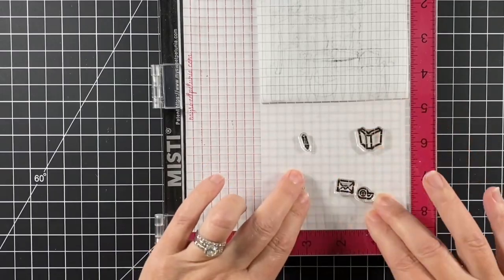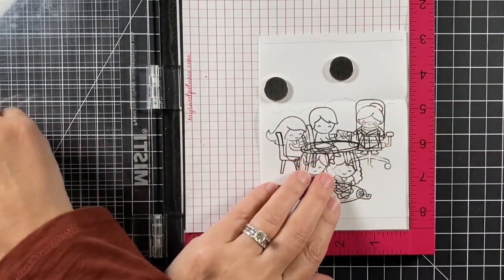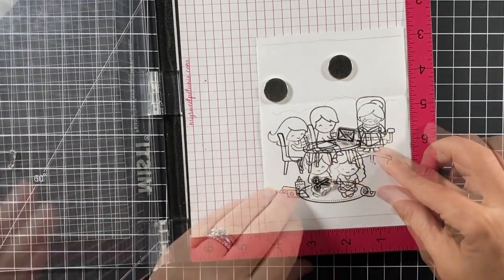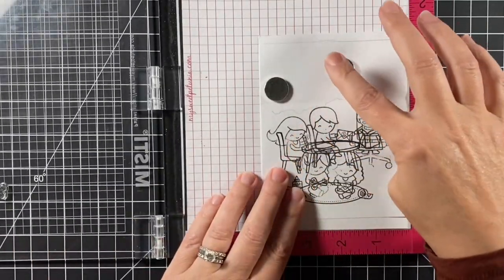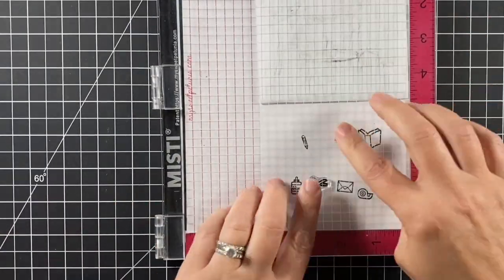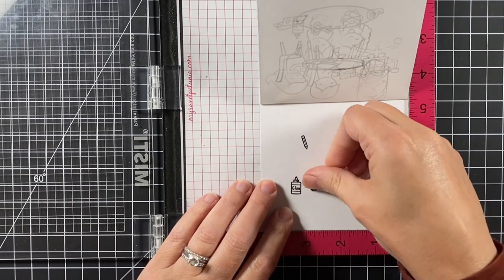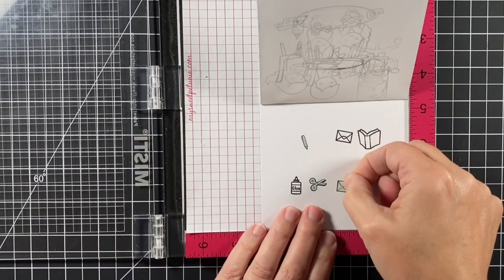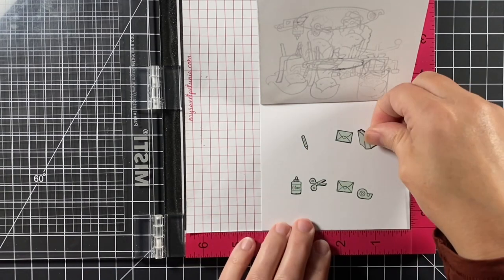Once I have some of those number ones all in place I'll pick those up on the door of the MISTI and flip up my scene and take my jet black ink and stamp them down. I have cut little masks for each of those images out of full stick post-it notes.